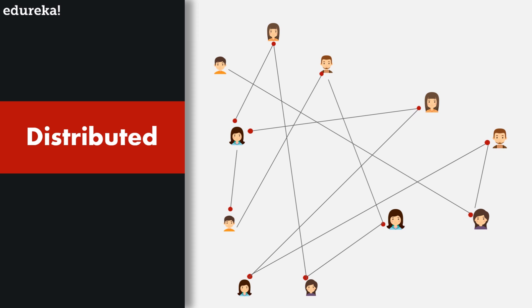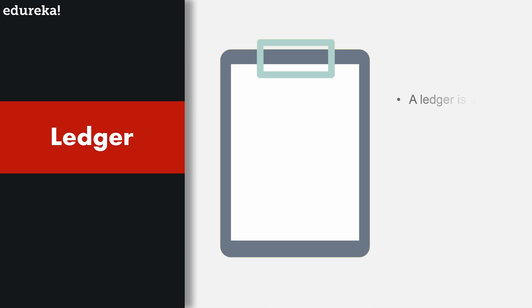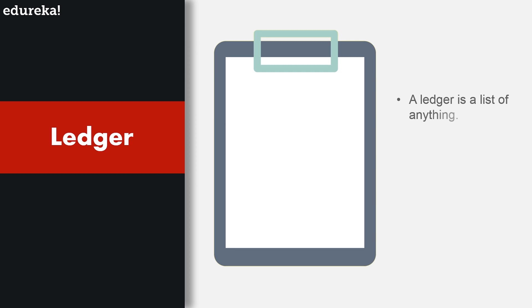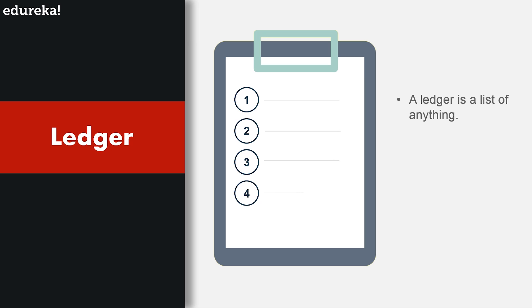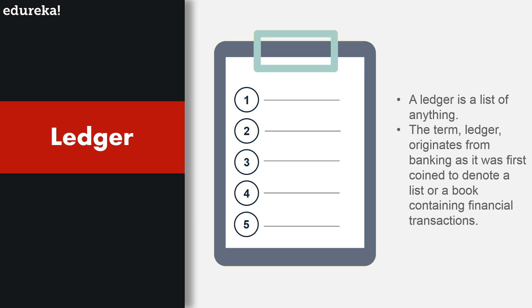Now let's look at the other half of the definition: blockchain is a public ledger system. A ledger is a list of anything — the term originates from banking, where it denoted a book containing financial transactions. In reference to blockchain technology, a ledger refers to all the transactions committed on the network.